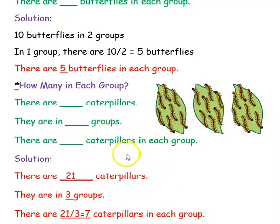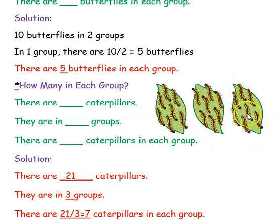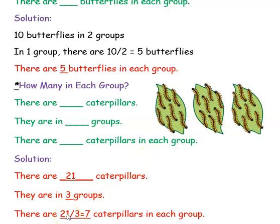There are dash groups — how many groups? This is 1 group, this is 2nd group, this is 3rd group. So they are in 3 groups. Totally 21 caterpillars and they are in 3 groups. The next question is: there are dash caterpillars in each group. So, 21 divided by 3 is 7. There are 7 caterpillars in each group.